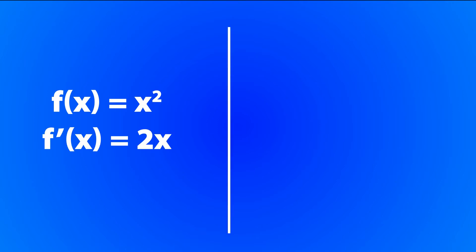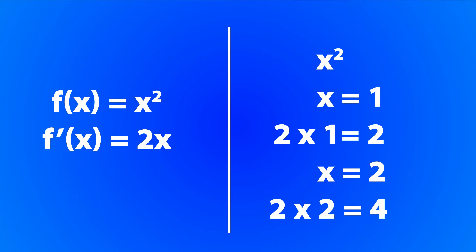If we take a look at the graph of x squared, at point x equals 1, it will be equal to 2 multiplied by 1, that is equal to 2. And at point x equals 2, it will be equal to 2 multiplied by 2, that is 4.